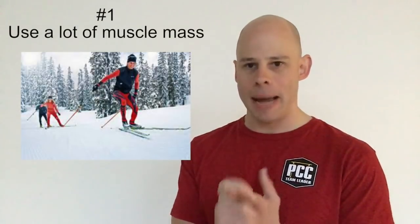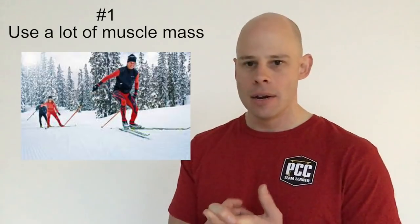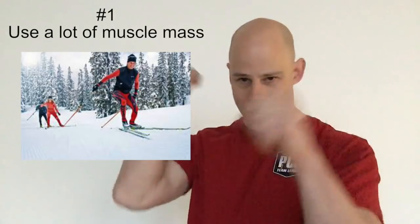But there are three things you can do to optimize it a little bit. Number one is how much muscle mass you're engaging in activity. Muscle is fat and calorie burning machinery. The more muscle you use, the faster you burn it. That's why things like cross country skiing, swimming, hiking with trekking poles and full body weightlifting exercises like kettlebells burn a lot of calories because we're using a lot of muscle.